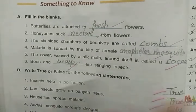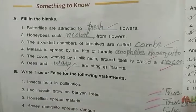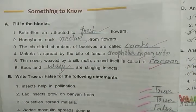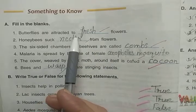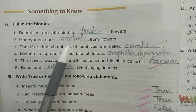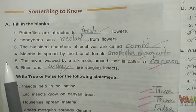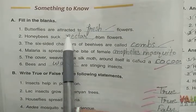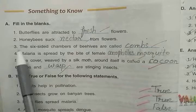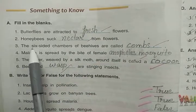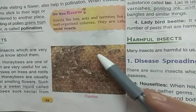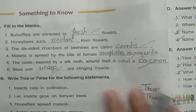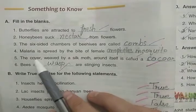Butterflies are attracted to fresh flowers — so the answer is fresh flowers. Honeybees suck nectar from flowers — nectar is the sweet juice of flowers. The six-sided chambers of beehives are called combs. You can see the six-sided chambers here — these are called combs.